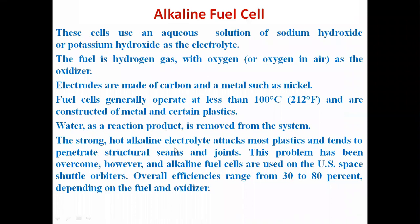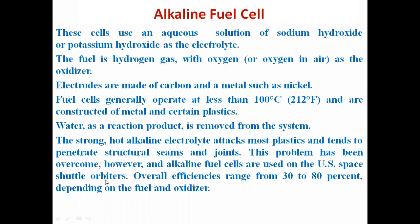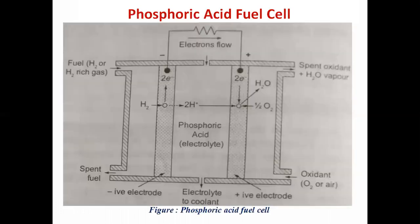The strong hot alkaline electrolyte attacks most plastics and tends to penetrate structural seams and joints. This problem has been overcome, however, and alkaline fuel cells are used in the US Space Shuttle orbiters. Overall efficiency ranges from 0.3 to 0.8, that is 30 to 80%, depending upon the fuel and oxidizer. If pure hydrogen and pure oxygen are used, efficiency will be higher; if hydrogen-rich gas or ambient air is used, it will be lower.